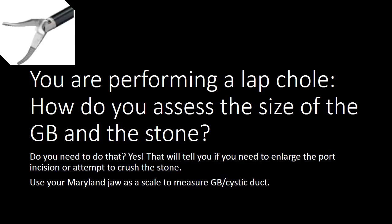Now you will be really wondering how to measure the gallbladder size, the cystic duct size and also the stone size just by looking at it on the monitor. How can you do so? Very simple. The first thing you need to do is measure your Maryland jaw. Most people don't know this, but it's a surgical fact that the Maryland jaw is usually 1.7 cm in length.